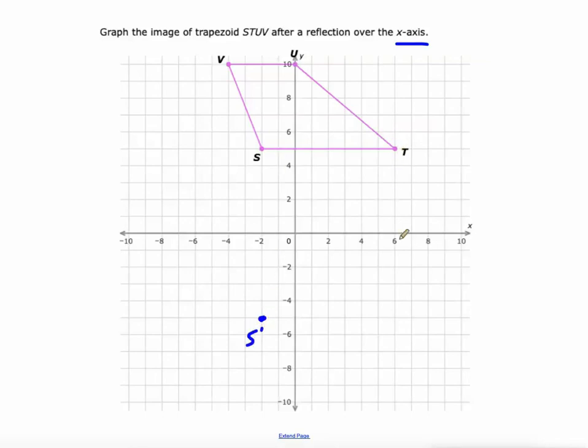T is also at 5. Comes straight down to negative 5. u is right on the y-axis. It's going to stay on the y-axis and be down at negative 10. And v is at negative 4. It's going to stay there. Oh, but it's at 10 up. So we're going to go 10 below the x-axis. So there's v prime. Connect those points using some lines and we'll be done. s to t to u to v.